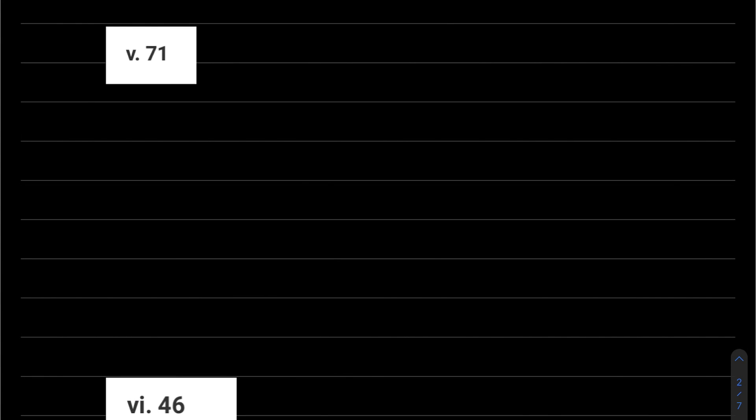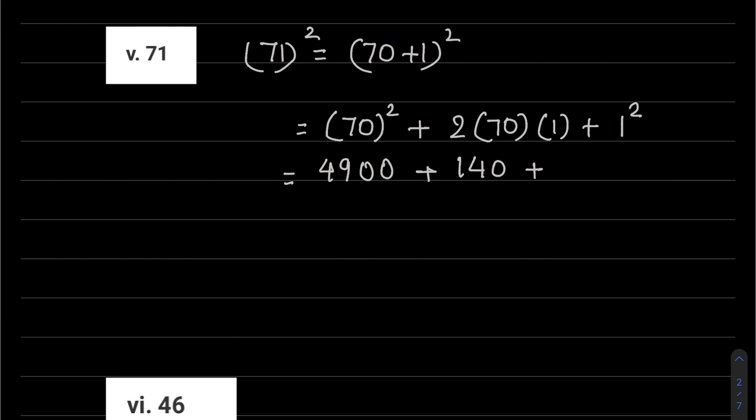Fifth part: 71 squared. So 71 squared can be written as 70 plus 1 whole squared, which equals a squared, that is 70 squared, plus 2ab, that is 2 into 70 into 1, plus b squared, that is 1 squared. 70 into 70 - 7 sevens are 49 and 10 into 10 - so two zeros. 2 into 70 is 140, and 1 squared, 1 into 1, is 1. So 4900 plus 140 plus 1.